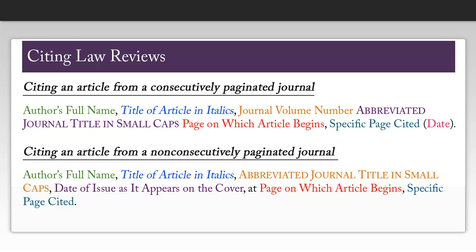At some point, you may be required to cite a law review, which is a legal version of an academic journal. There are two basic types: those that are consecutively paginated and those that are non-consecutively paginated.